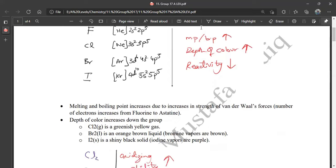Cl2 gas is a greenish yellow gas, Br2 is an orange brown liquid, and I2 is a shiny black solid.